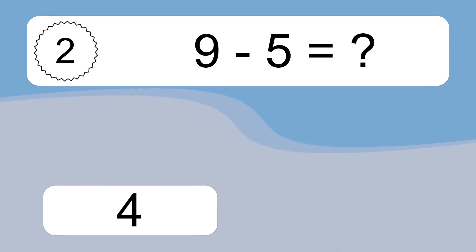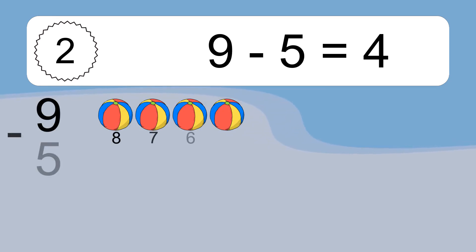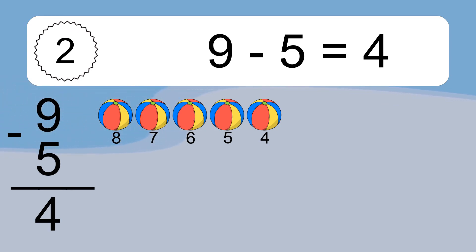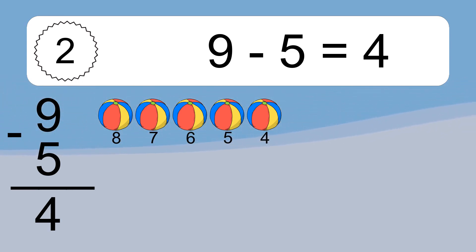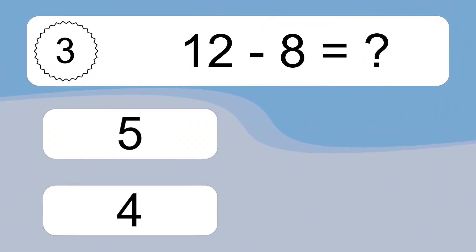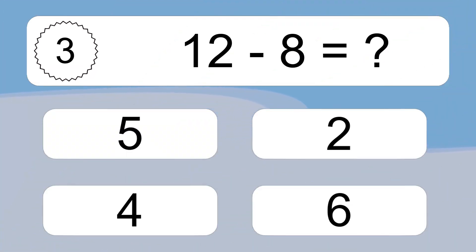9 minus 5 equals what? 9 minus 5 equals 4. Let's count it: 8, 7, 6, 5, 4.